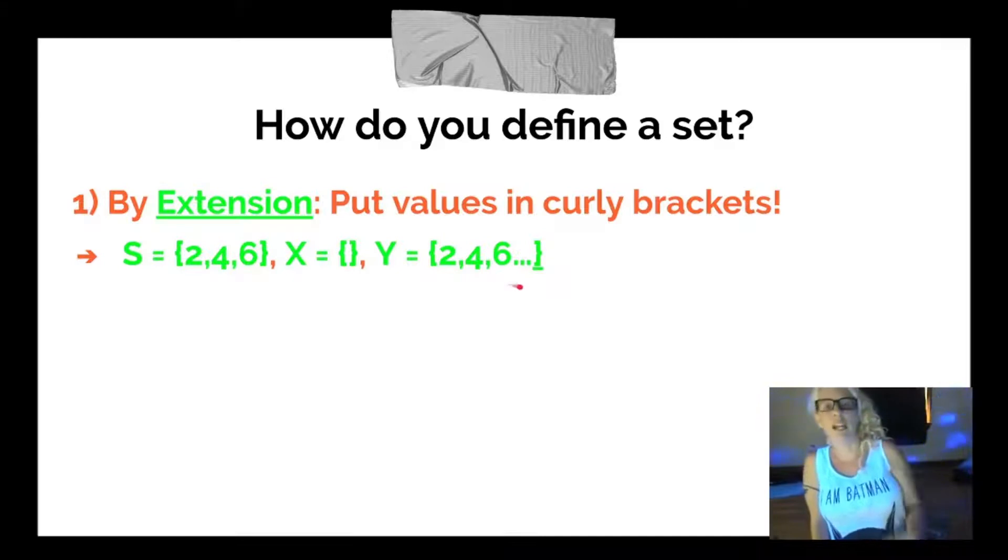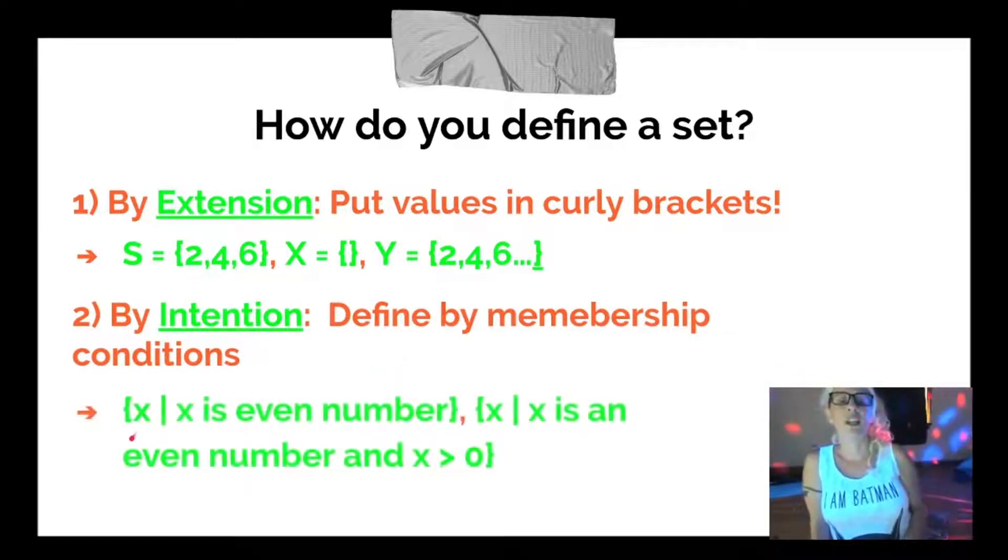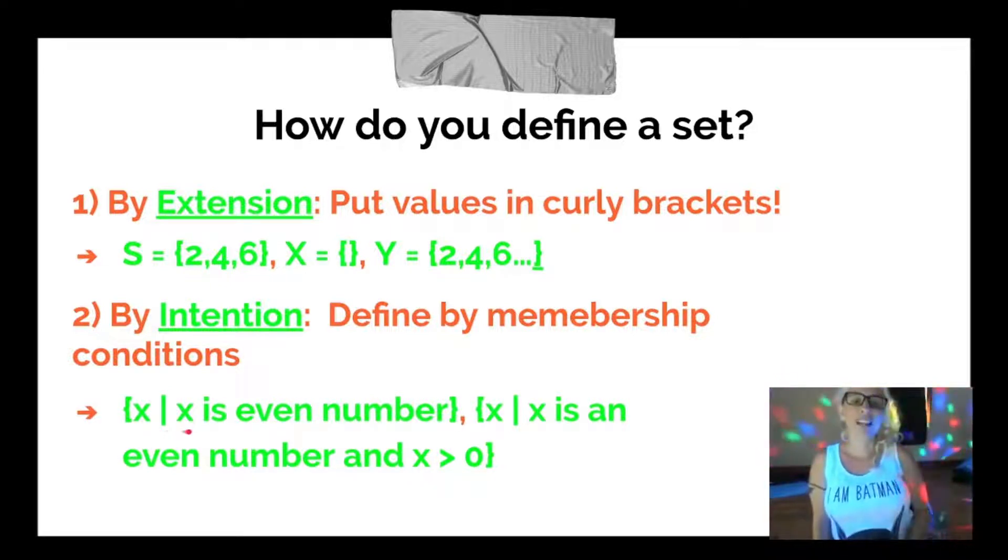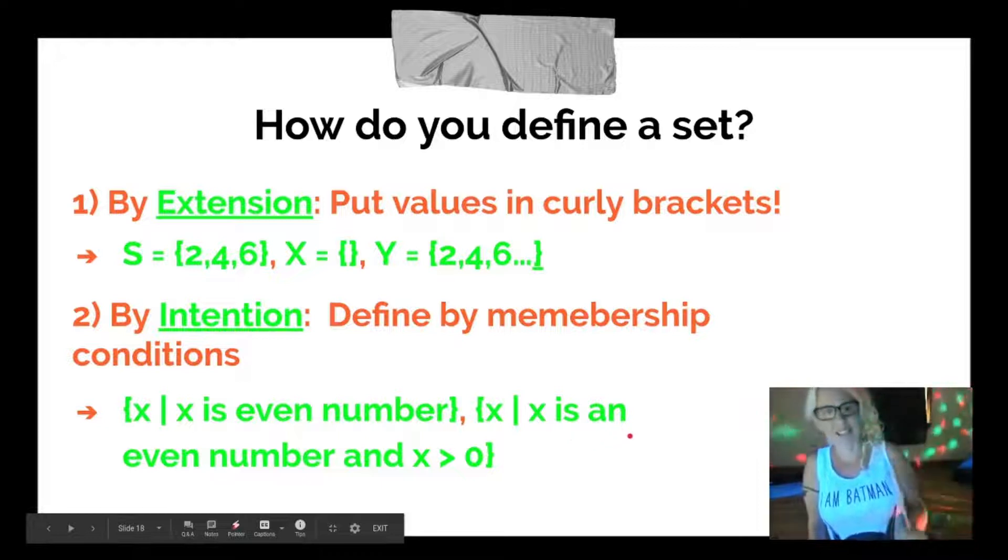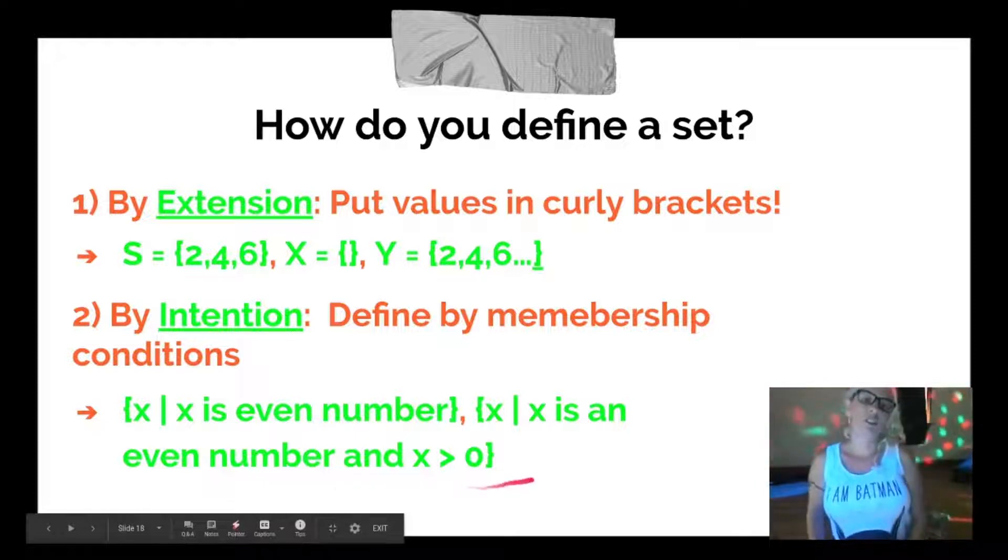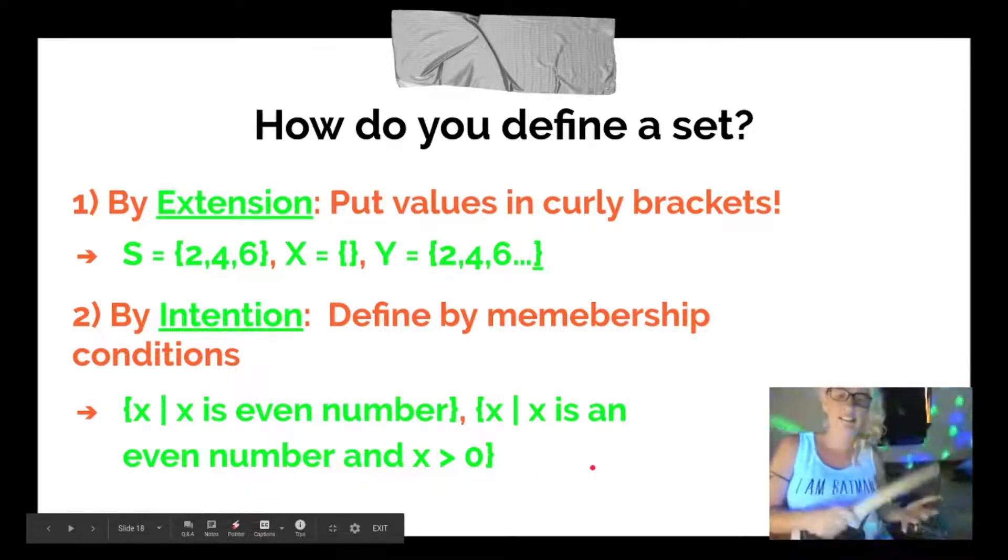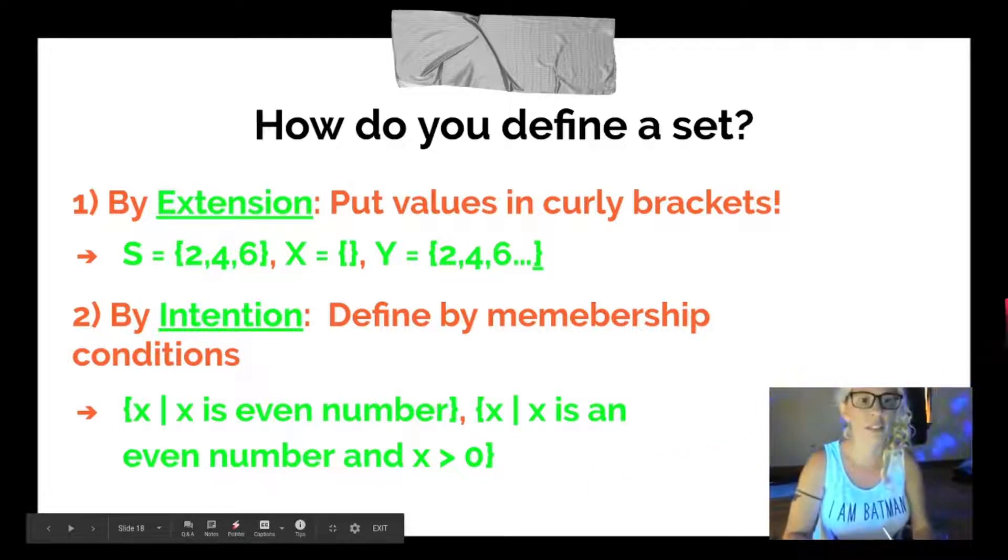The second way to define a set is by intention. And that's also called defining a set by membership conditions. Example, X such that X is an even number. Or another example would be X such that X is an even number and X is less than 0. So in the first example, as long as X is an even number, it's going to be a member of the set. In the second example, as long as X is an even number and is also greater than 0, it will be part of the set.